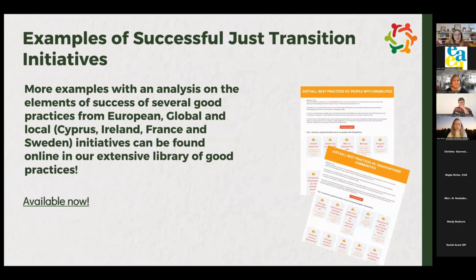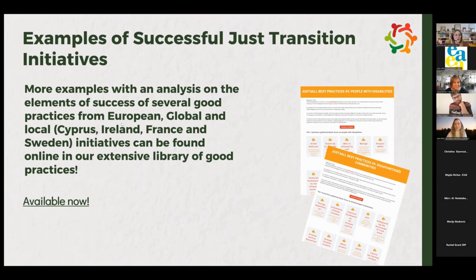The Just For All project, coordinated by the Solidar Network in Brussels and the EAEA — the European Association for the Education of Adults — have come out with a variety of successful Just Transition initiatives, available on the Solidar page for the project. There are lots of examples of how community-driven and grassroots initiatives can work, with good examples from European, global, and local contexts including Cyprus, Ireland, France, and Sweden, which can be looked at by theme after the webinar.